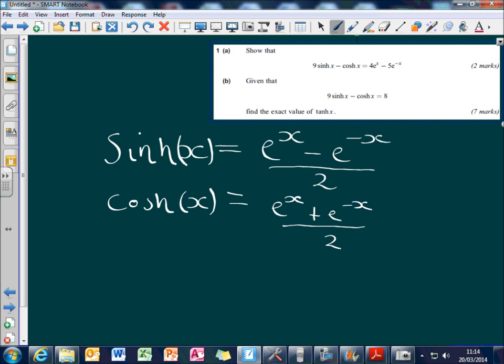With that, we can substitute it back into the original equation. So we'll have 9 e to the x minus e to the minus x all over 2, minus just one cosh, so e to the x plus...